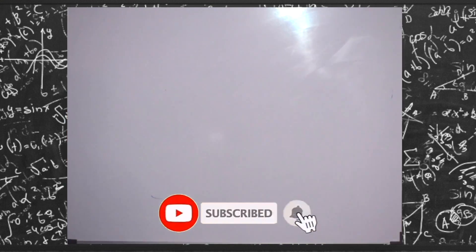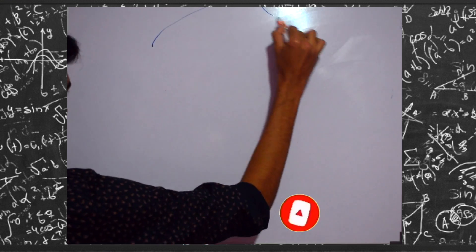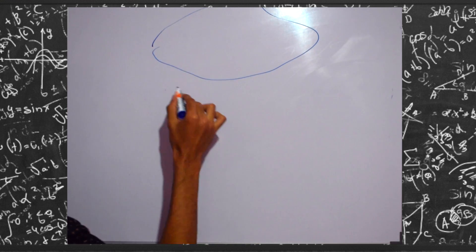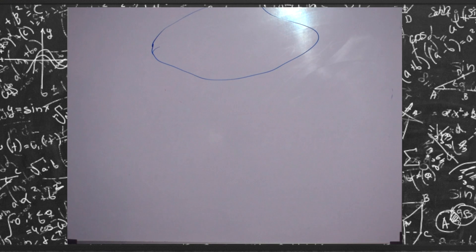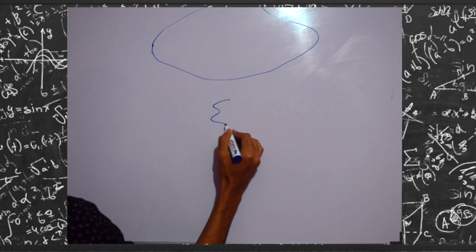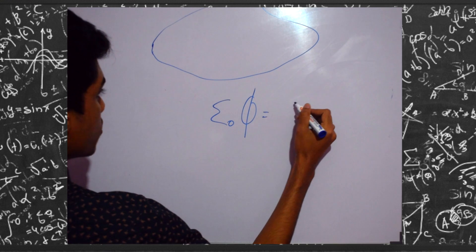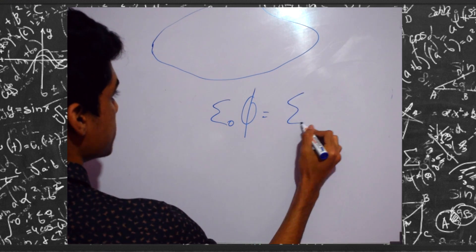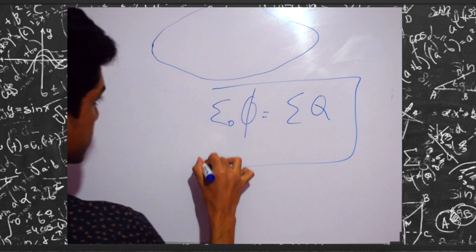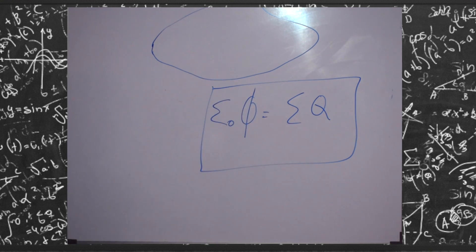Gaussian theorem. Gaussian theorem is what we can do. It's a 3rd paraprogram.